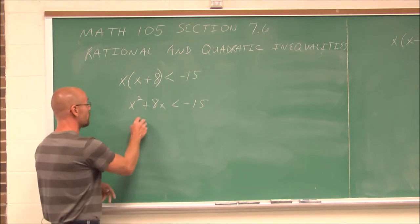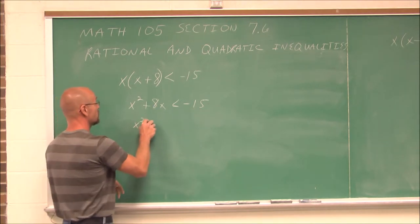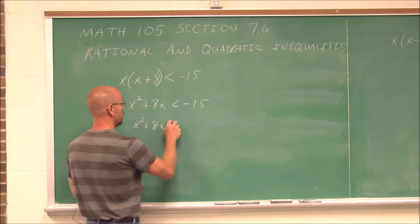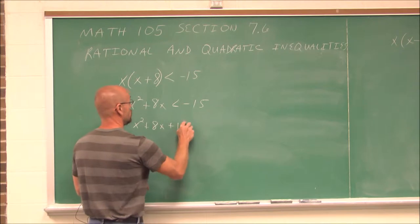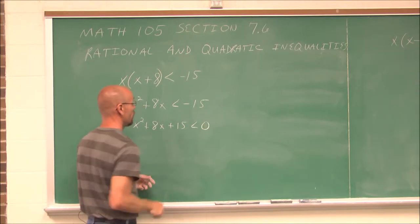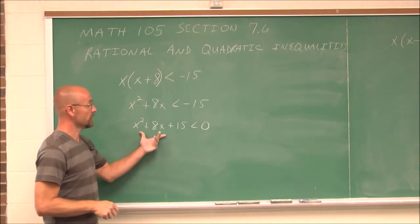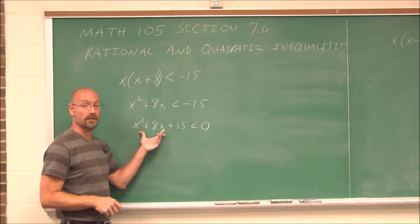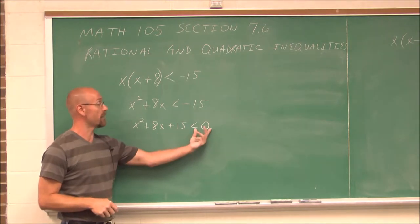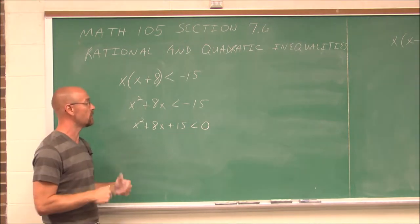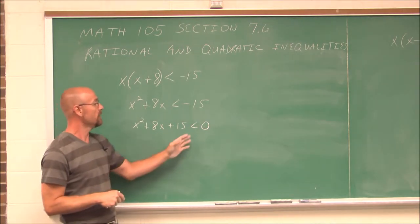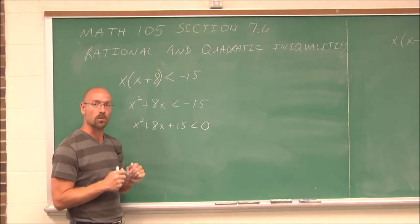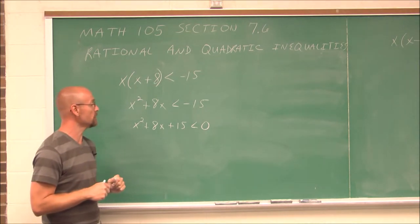So what I'm going to do is get it set to 0 on one side — I'm going to add 15 to both sides. So this is my inequality in standard form. I have 0 on one side, and the reason why we do that is it kind of narrows down what we're actually looking for.